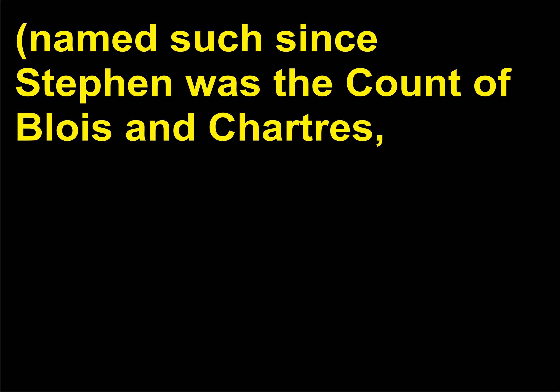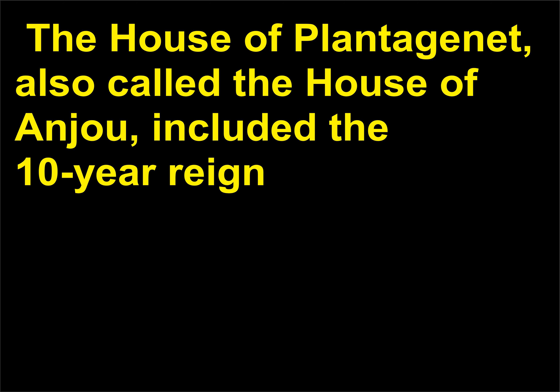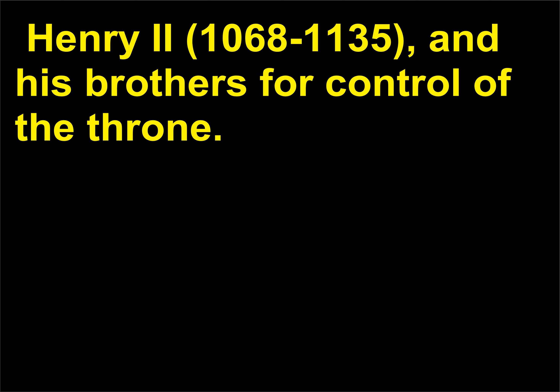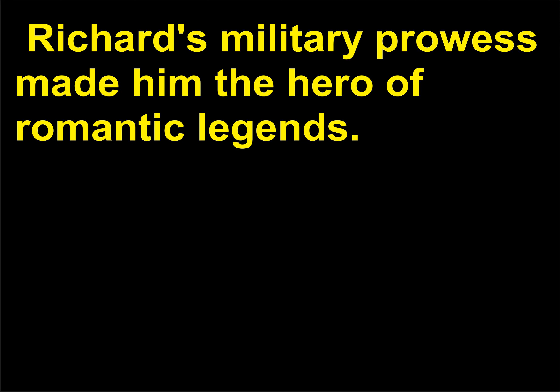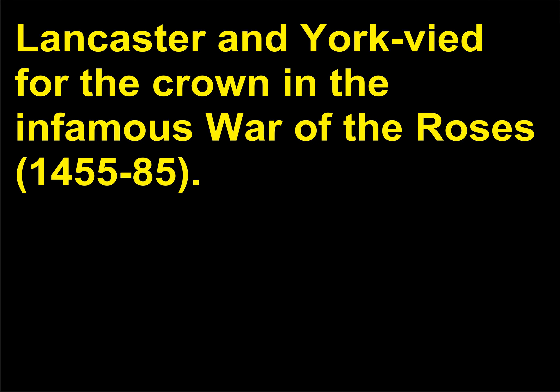The House of Blois was so named since Stephen was the Count of Blois and Chartres, though he was raised in the court of his uncle, King Henry I, whom he succeeded. The House of Plantagenet, also called the House of Anjou, included the ten-year reign, 1189–99, of Richard I, or Richard the Lionhearted, 1157–1199, who fought his father Henry II and his brothers for control of the throne. Richard's military prowess made him the hero of romantic legends. Thereafter, two contending branches of the House of Plantagenet — the Houses of Lancaster and York — vied for the crown in the infamous War of the Roses, 1455–85.